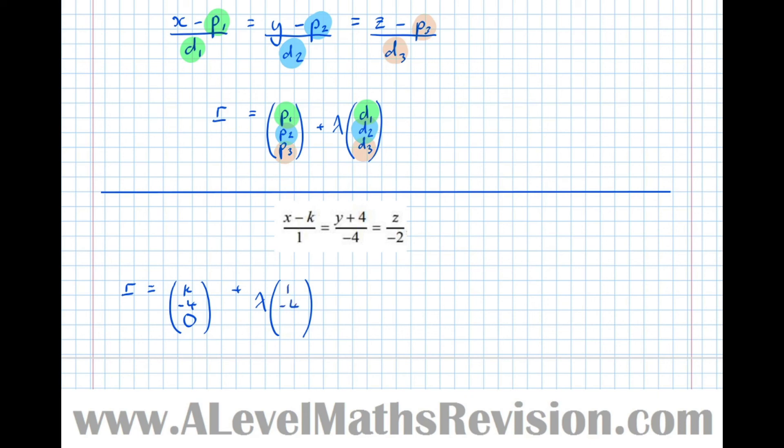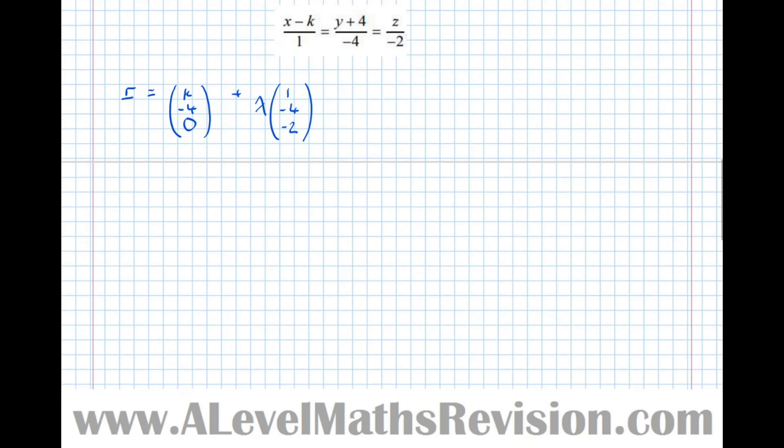So let's have a look at, let's say we've got a vector line r equals (2, 7, -3) plus lambda (2, 4, 1).